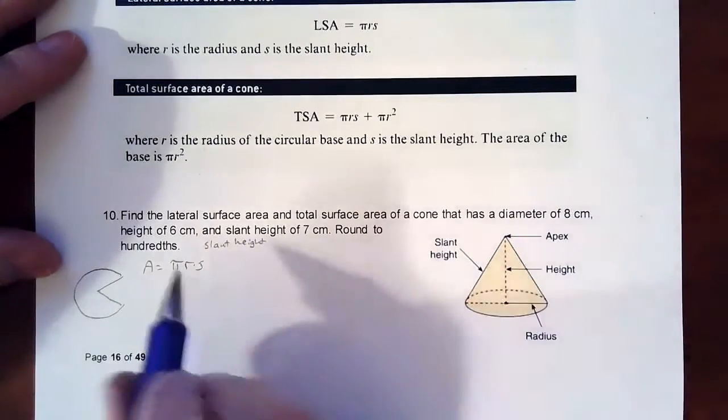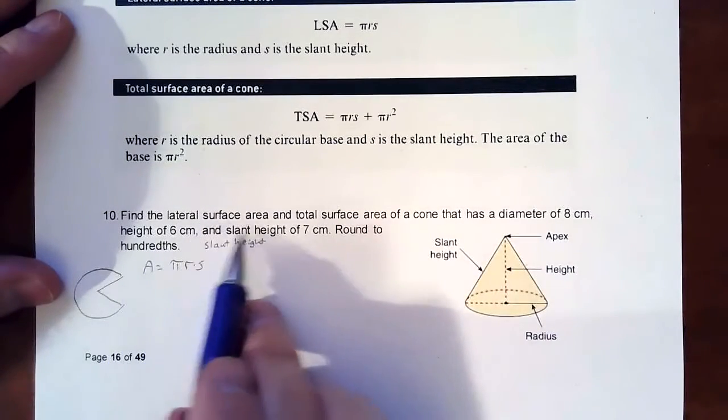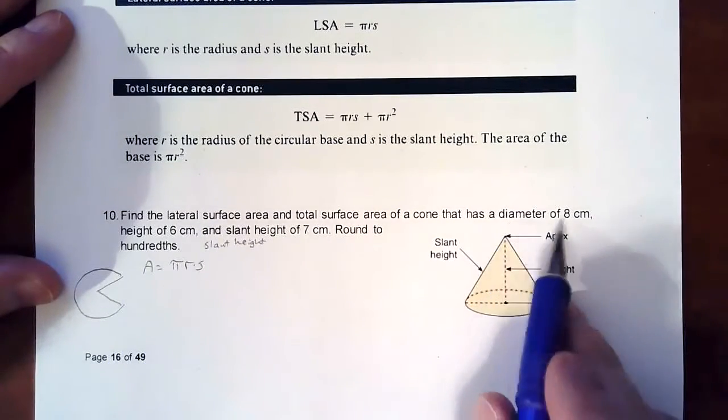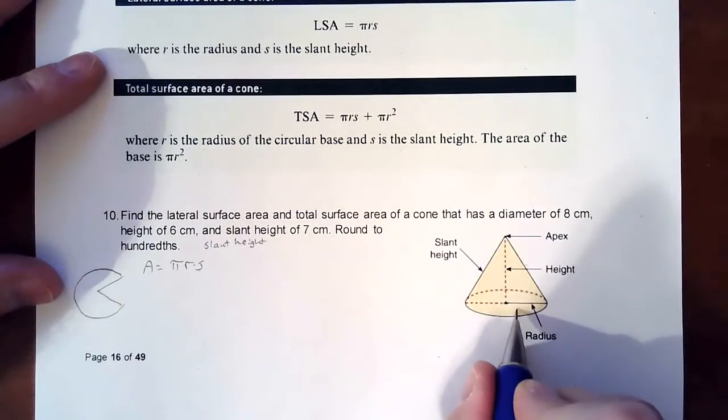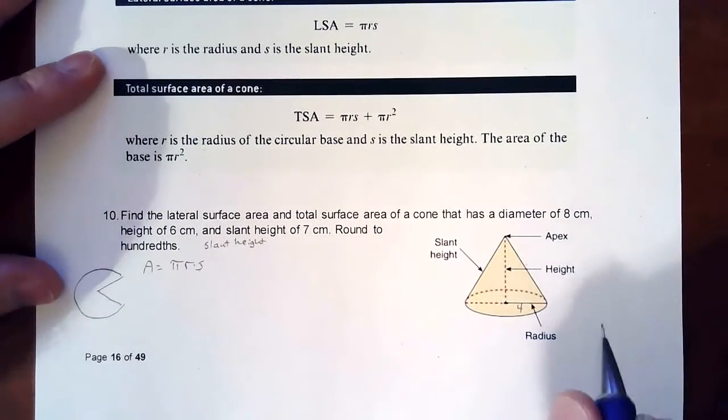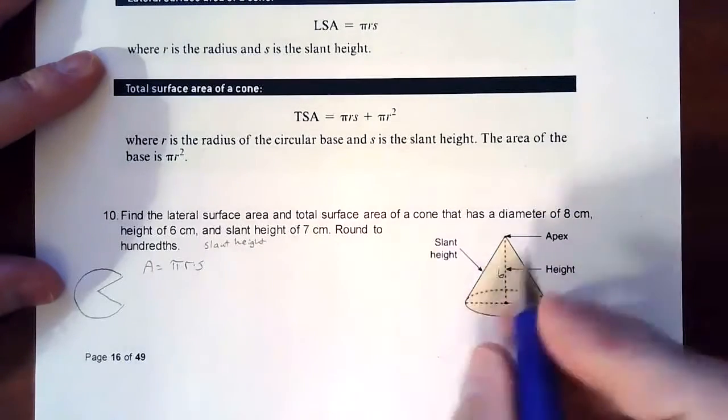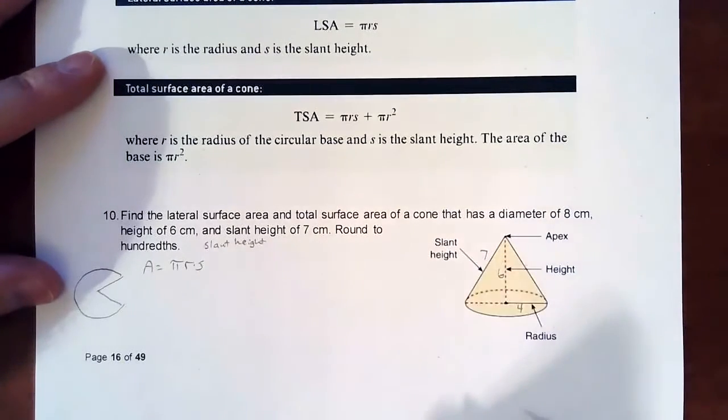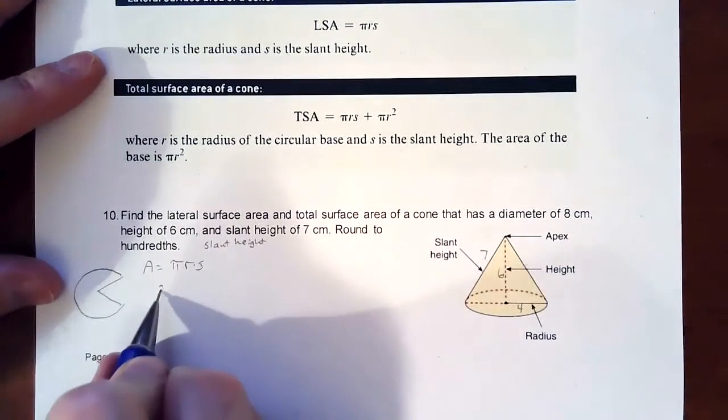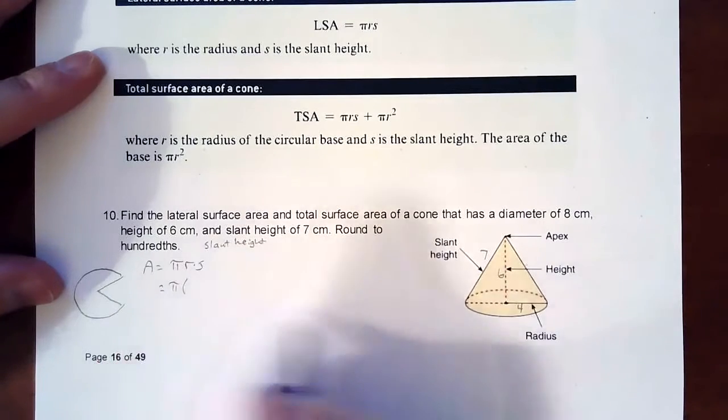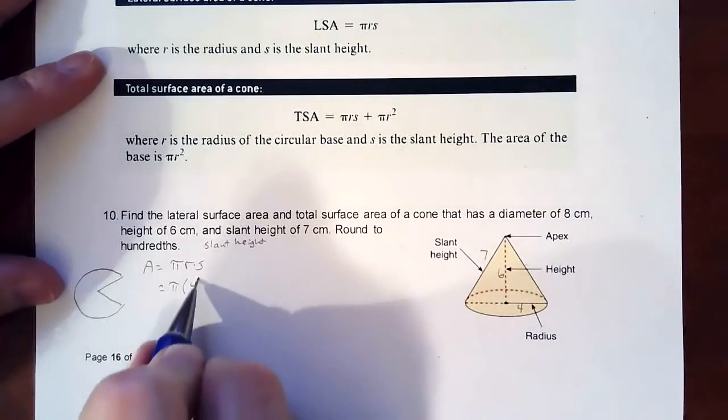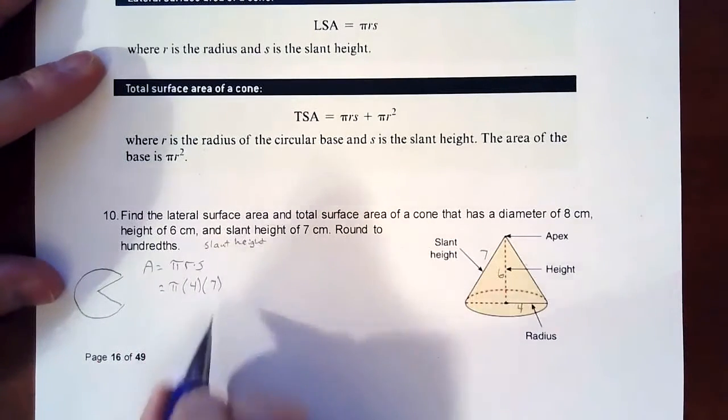So for this problem, we're going to find the lateral surface area and total surface area of a cone with diameter 8, which makes the radius 4, height of 6, and slant height of 7. To find the lateral area, we're going to do π times the radius of 4 times the slant height of 7.